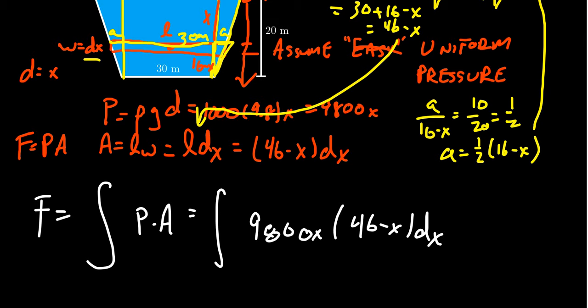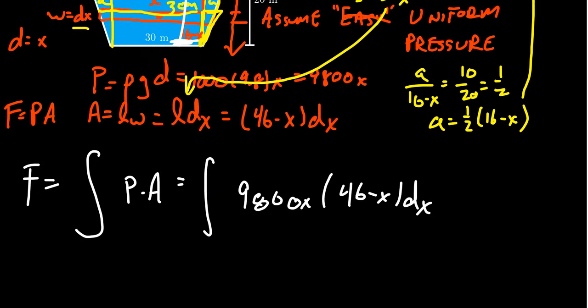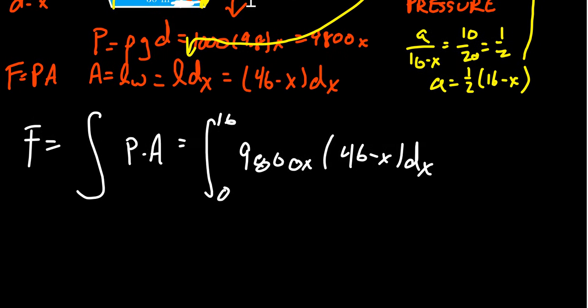The last thing to determine are the bounds for x here. Where does x range? X can go anywhere from the top, which is x equals 0, all the way to the bottom, which is x equals 16. And in which case we then get from 0 to 16 right here. So once this thing is set up, this is, of course, the important part here. Once we get this thing set up, the actual calculation isn't so bad whatsoever.